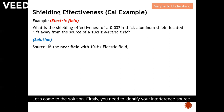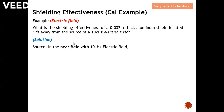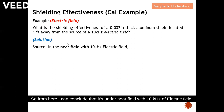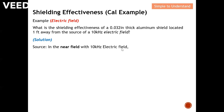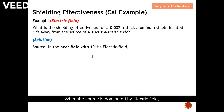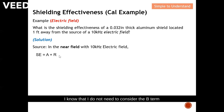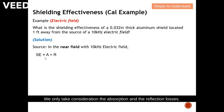Let's come to the solution. Firstly, you need to identify your interference source. From here I can conclude that it's under near field with 10 kilohertz of electric field. When the source is dominated by electric field, I do not need to consider the B-term. Under electric field, we can omit the B-term — we only take into consideration the absorption and the reflection loss.